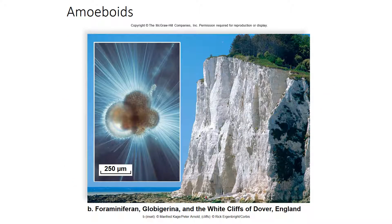Foraminifera and Globigerina are types of amoeboid protists. The shells or scales of these organisms over millions of years have sunk to the bottom of the ocean, accumulated, and been compressed into limestone. The White Cliffs of Dover are made up of this limestone or calcium carbonate — they're 300 feet tall and stretch along for eight miles in Dover, England. They're made up of basically the shells and remains of amoeboids stacked and pressed down for millions of years.